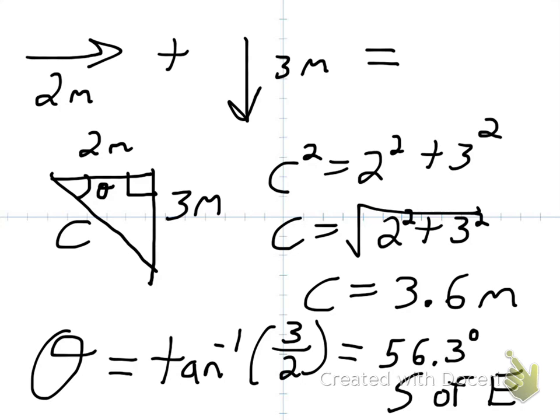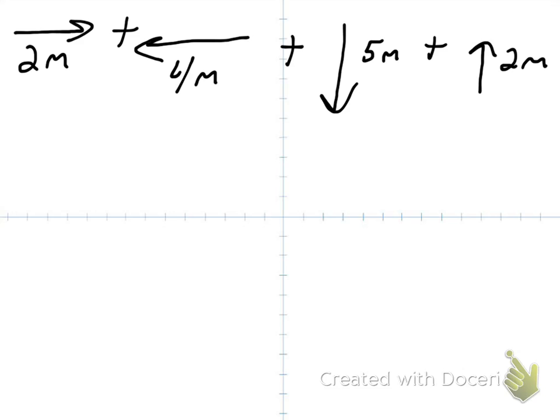So hopefully that problem wasn't too bad for you. You should know most of it from doing projectiles. This unit, we're going to take this a little bit further now. We're going to get even more vectors added up all at once. So we have a more complicated problem of 2 meters east, plus 4 meters west, plus 5 meters south, plus 2 meters north. So now we have every single direction on the compass added up, and these could be in any order. But remember, just add them in order.